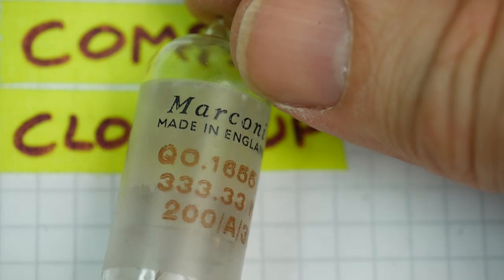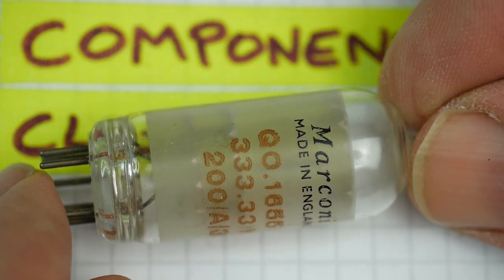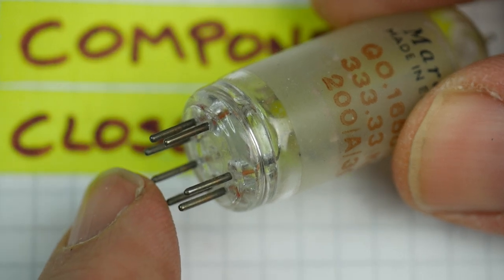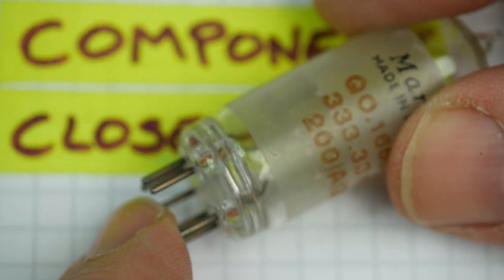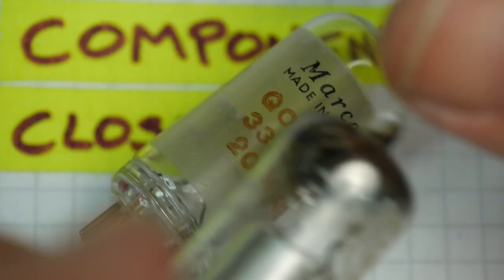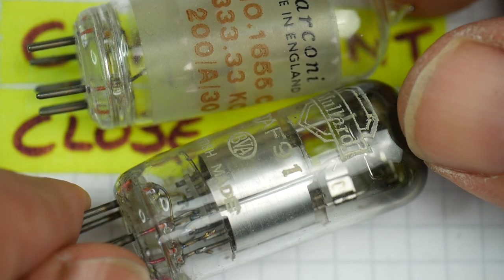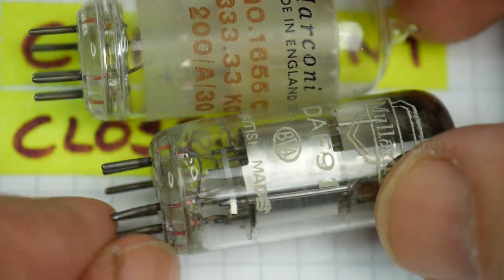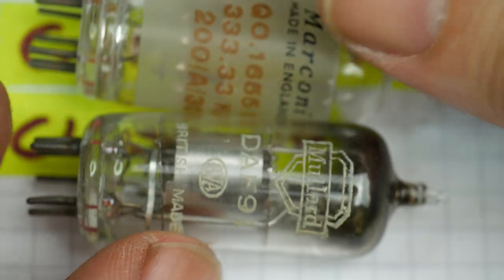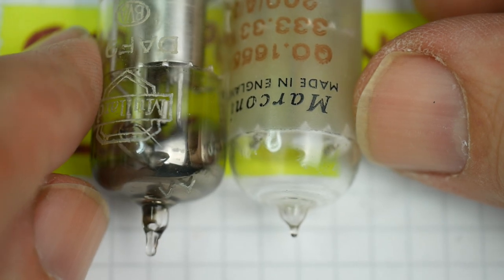So what is this thing? It's in a casing like a valve - a glass envelope with pins on the bottom, 7 pins, like a valve base. In fact, if I get a valve, you'll see that it's exactly the same. It's just like a valve. There's a Mullard DAF91, 7 pins, just the same. Same length, same diameter.